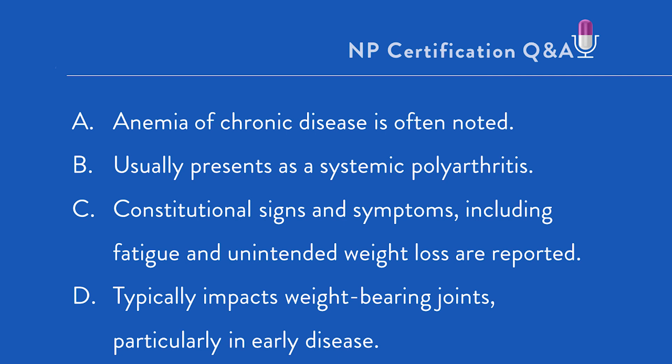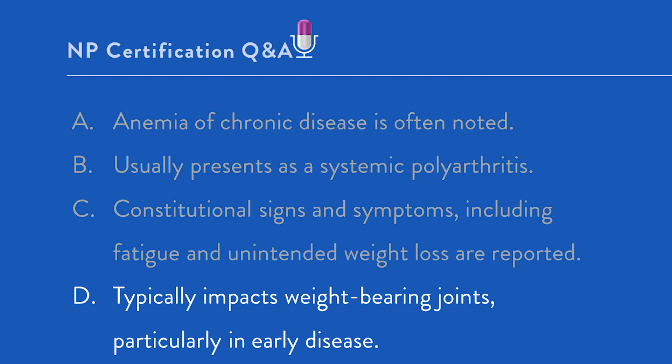Option D: typically impacts weight-bearing joints, particularly in early disease. Option D is, of course, the correct answer. While in later OA multiple joints can be impacted, in earlier disease weight-bearing joints, such as the knees and the hips, are most commonly noted. Key takeaway: in order to answer a question on assessment, a critical part of safe and effective clinical practice, you need to know the typical clinical findings in commonly encountered clinical conditions.